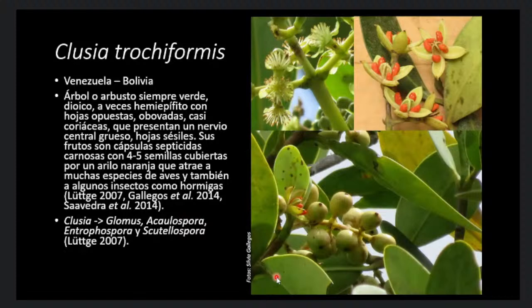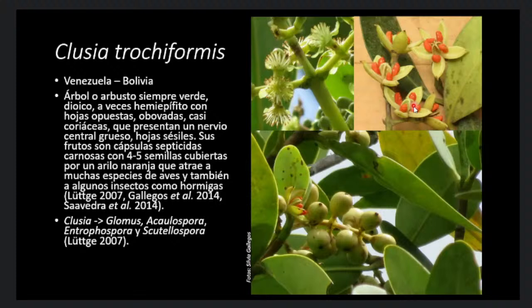Nuestra especie de estudio ha sido Clusia trochiformis, distribuida en los Andes Tropicales desde Venezuela hasta Bolivia. Es un árbol o arbusto siempre verde, dioico, con hojas opuestas o lobadas con una nervadura central marcada. Los frutos son cápsulas septicidas que se abren en cuatro, y las semillas se encuentran recubiertas por un arilo con concentraciones de lípidos bastante altas, que atrae tanto a aves como a hormigas. Previamente se ha descrito que Clusia se encuentra asociada a micorrisas de los géneros Glomus, Acaulospora, Entrophospora y Scutellospora.